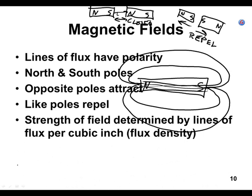How strong a magnet is is determined by how many lines of flux are in a given volume. For instance, if I take one cubic inch and count how many lines of flux are inside that cubic inch — say four — versus another cubic inch with only two lines of flux, the one with four lines is stronger. This magnet is stronger at the poles because the lines of flux are concentrated there.